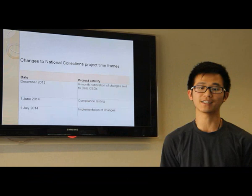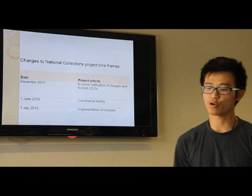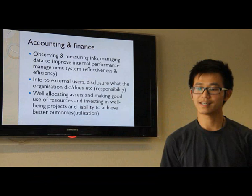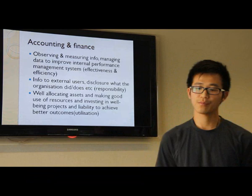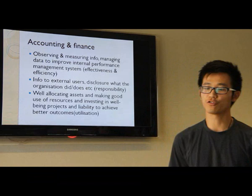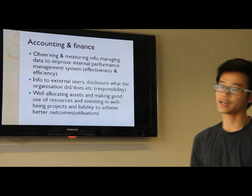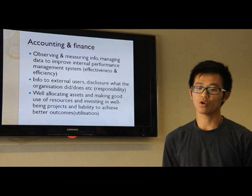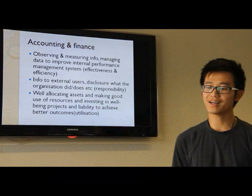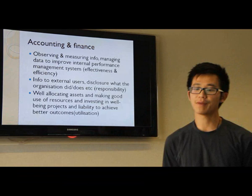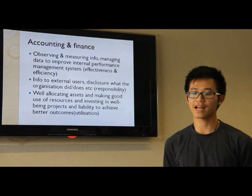Here is a diagram showing the project timeframes. Linking the information system into accounting and finance: information can be observed and measured, and data managed to improve internal performance management systems for greater effectiveness and efficiency. Information to external users discloses what the organization did or does, representing responsibility to society and the public sector, while allocating assets, making good use of resources, and investing in well-being projects to achieve better outcomes.